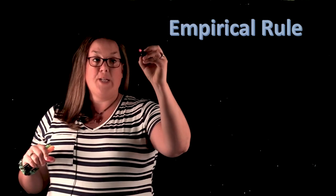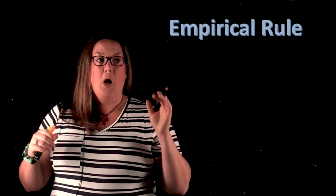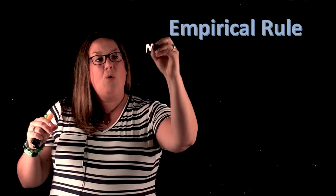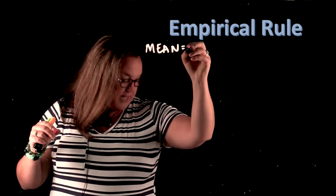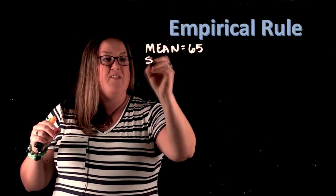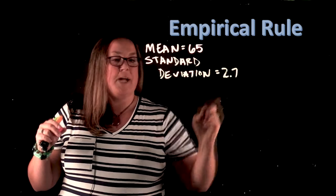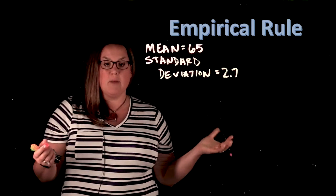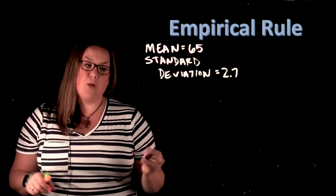So we're going to look at utilizing the empirical rule for female heights. The mean of female heights is 65 inches and the standard deviation is 2.7 inches. We're going to utilize that information to calculate the empirical rule. Remember, there are three separate intervals that you end up calculating.